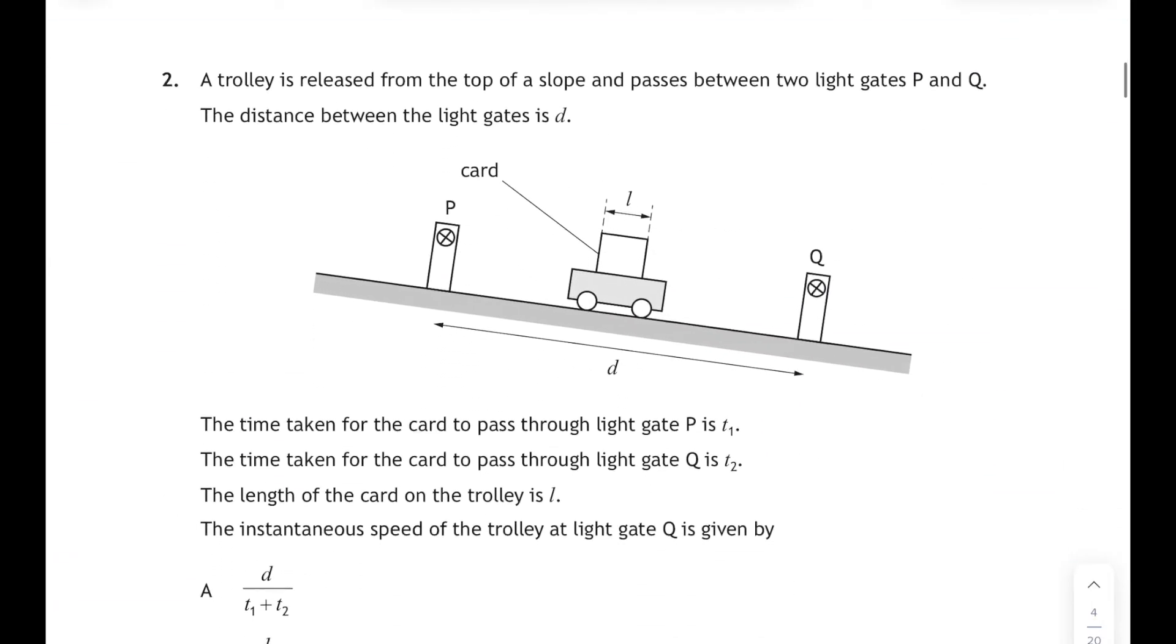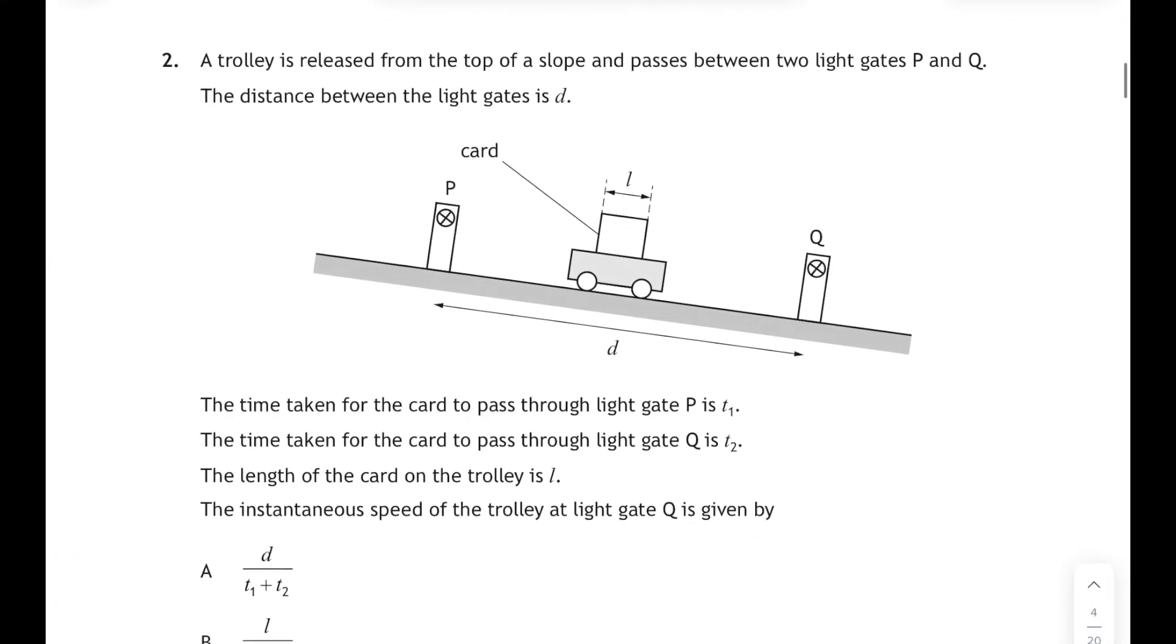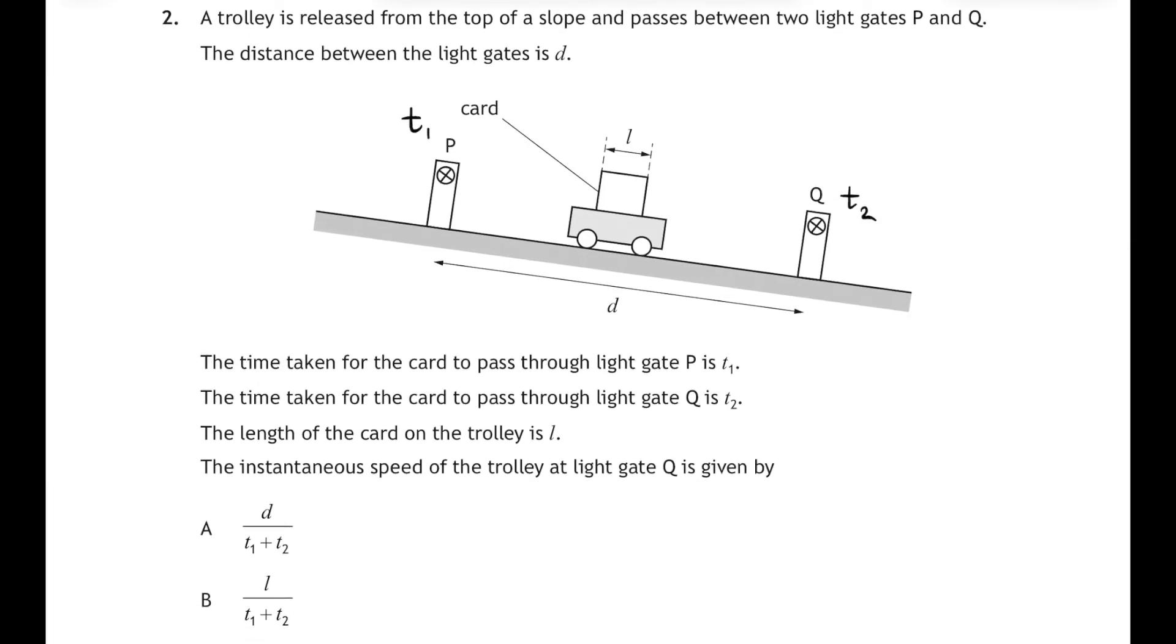Question two: a trolley is released from the top of a slope and passes between two light gates P and Q. The distance between the two is d, and the time taken for the card to pass through light gate P is t1, and the time taken for the card to pass through light gate Q is t2. So let's write them on the diagram. The length of the card is l, and now we're looking for the instantaneous speed of the trolley at light gate Q. Well, when it passes through that second light gate at the bottom.